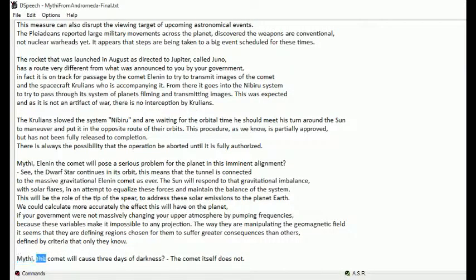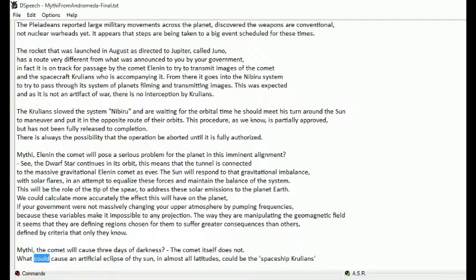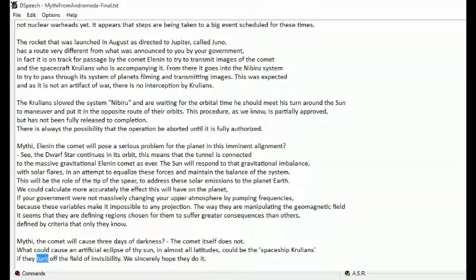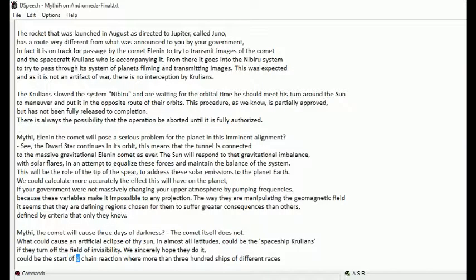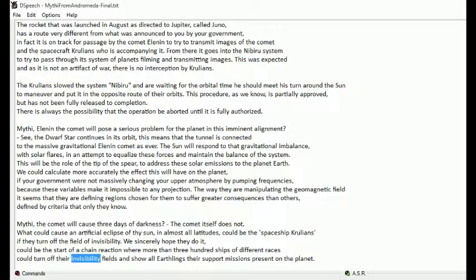Mythi, the comet will cause three days of darkness. The comet itself does not. What could cause an artificial eclipse of thy sun in almost all latitudes could be the spaceship Krullians. If they turn off the field of invisibility, we sincerely hope they do it. Could be the start of a chain reaction where more than three hundred ships of different races could turn off their invisibility fields and show all earthlings their support missions present on the planet.